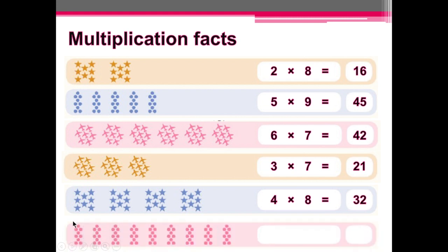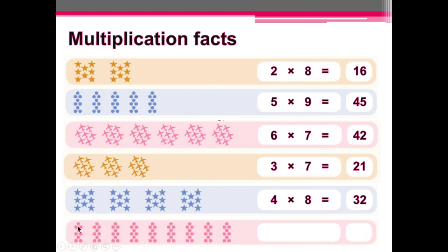Next one: 1, 2, 3, 4, 5, 6, 7, 8, 9 — we have 9 dots in 1 group. And we have 1, 2, 3, 4, 5, 6, 7, 8, 9 — 9 groups. So 9 multiplied by 9 is equal to 81.